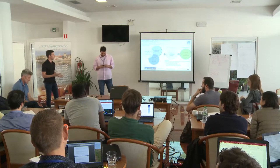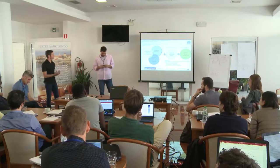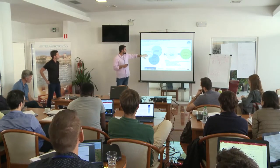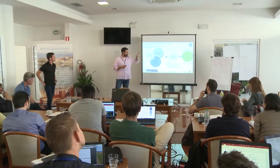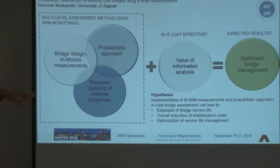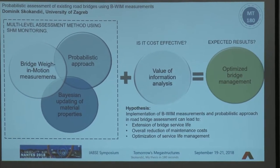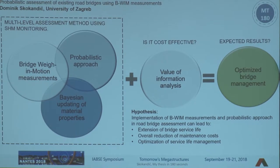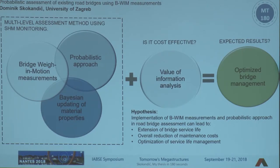Can you explain a little more about bridge weigh-in-motion? Sure. So, bridge weigh-in-motion — for those not familiar. First, without the bridge: weigh-in-motion uses sensors built into the pavement that measure vehicles as they drive over them. The information they give you is: how many axles the vehicle has, weight of every axle, gross weight of the vehicle, plus vehicle speed.